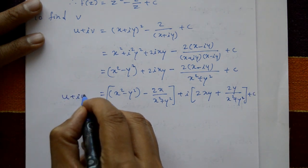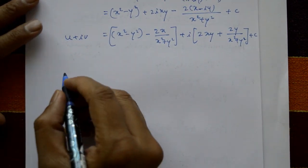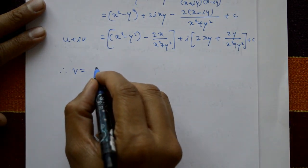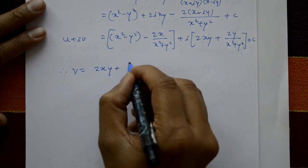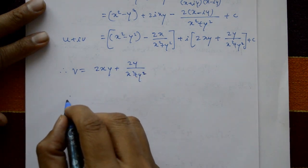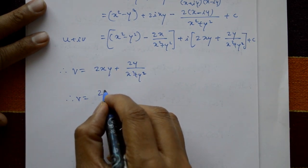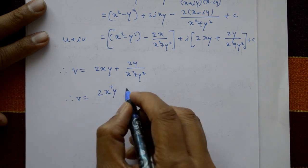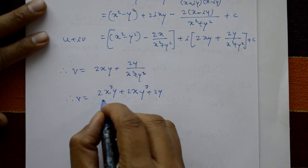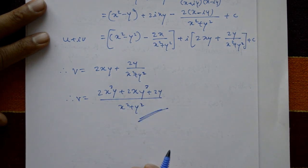Separating real and imaginary parts: the real part u = x² - y² - 2x/(x² + y²), and the imaginary part (phi) v = 2xy + 2y/(x² + y²). Therefore v = (2x³y + 2xy³ + 2y)/(x² + y²), which is the required solution.